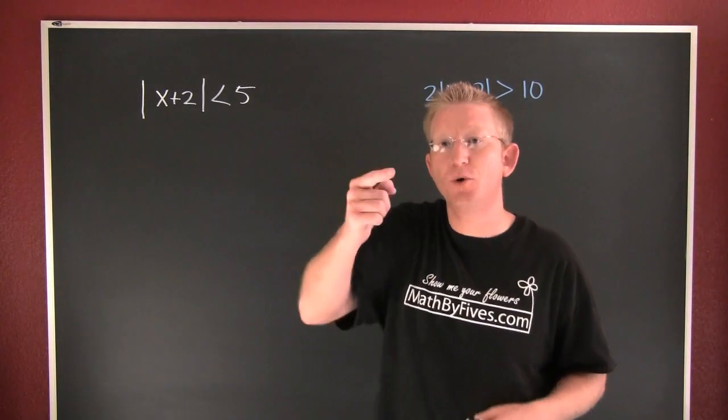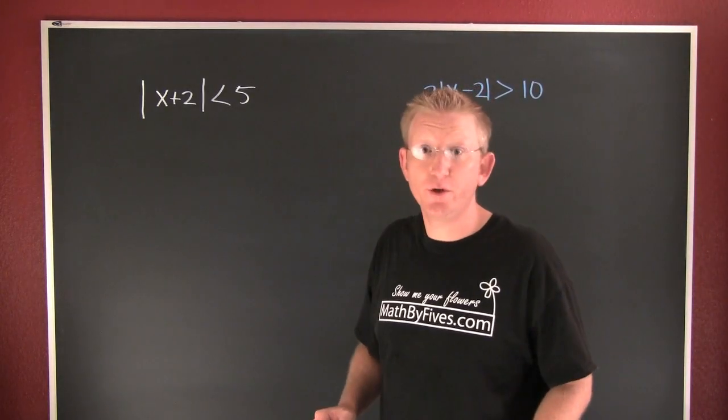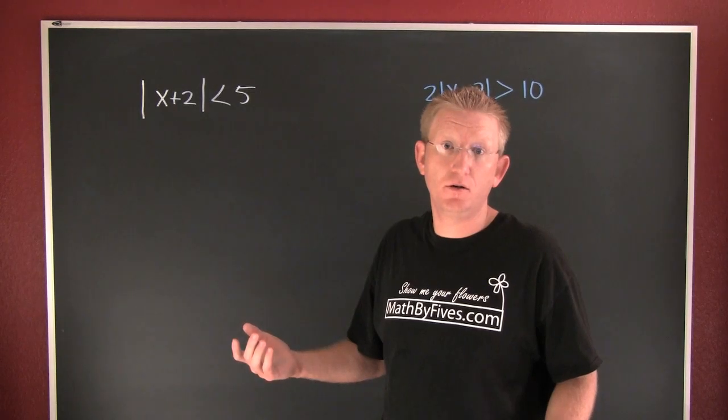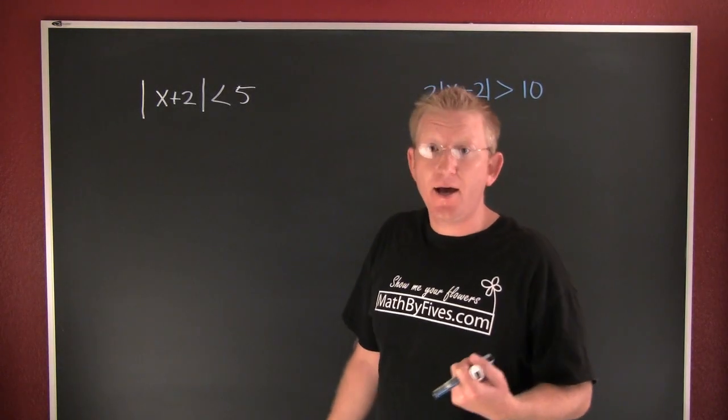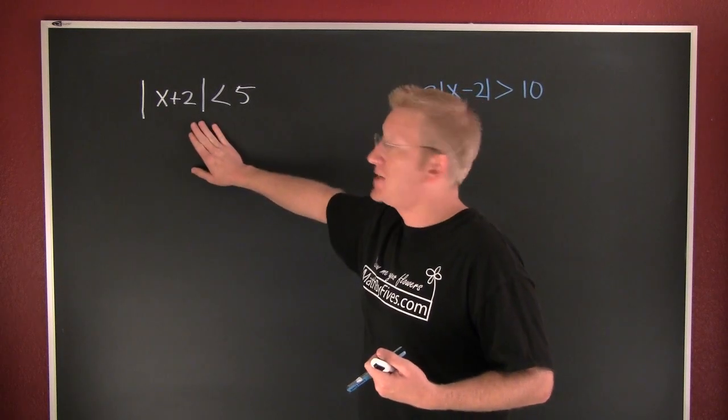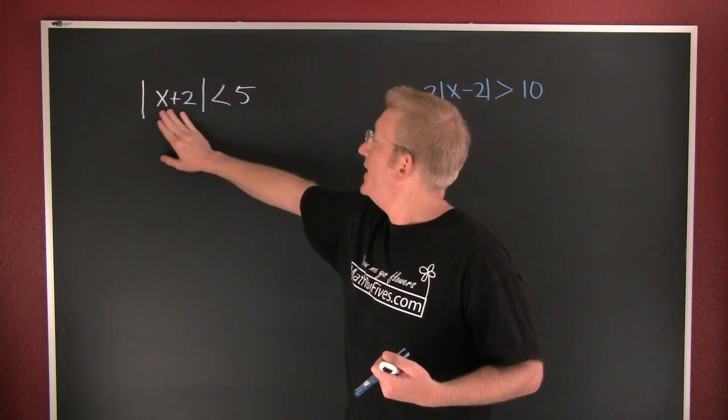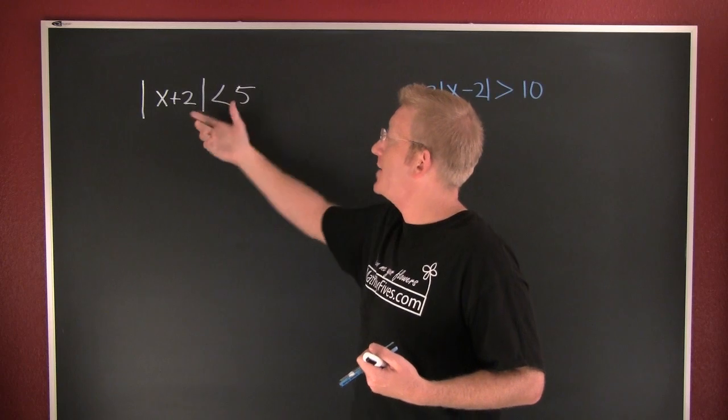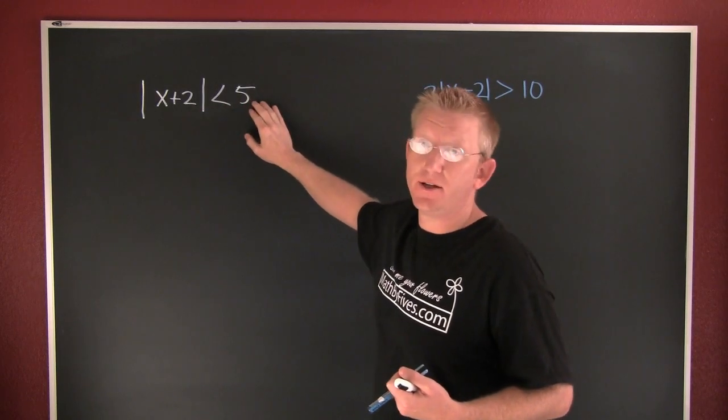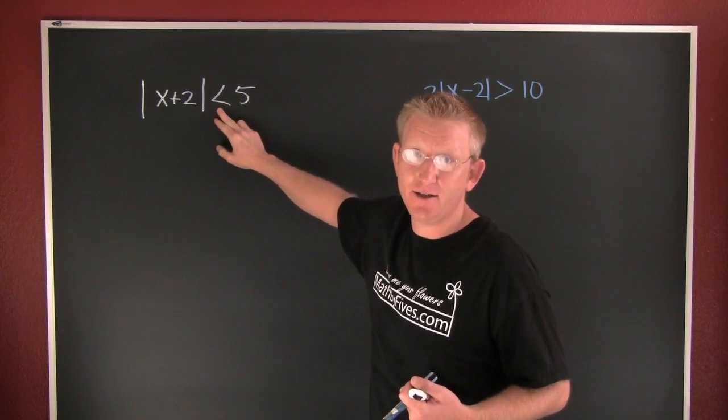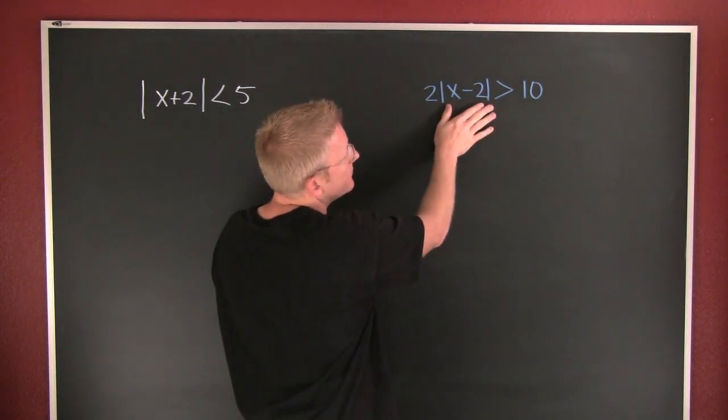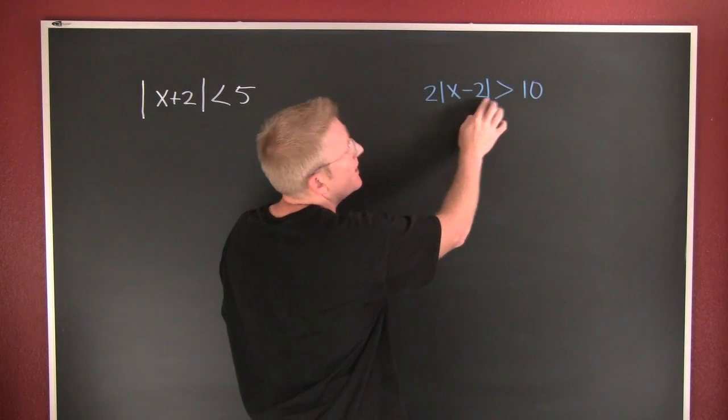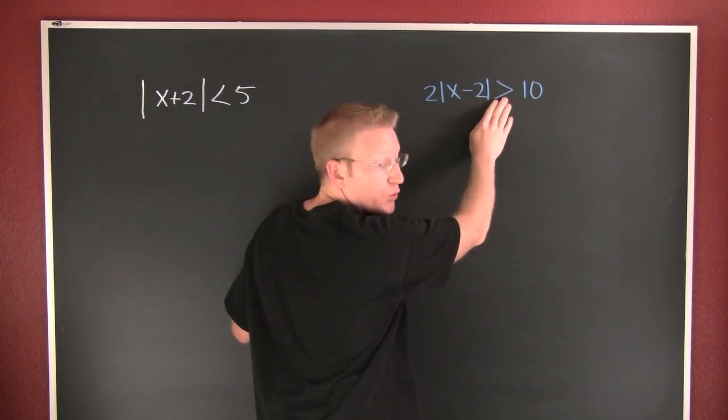All right, so I have a couple of examples for you for absolute value inequalities. Our first example, the white example: the absolute value of x plus 2 is less than 5. Over here I have 2 times the absolute value of x minus 2 is greater than 10.